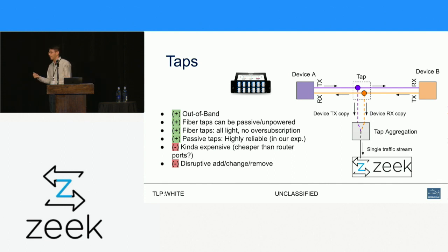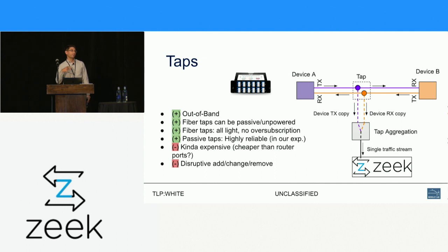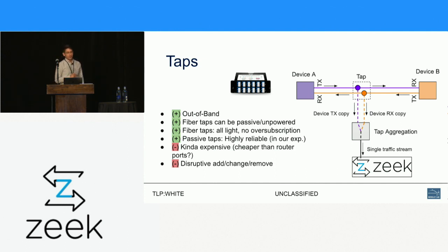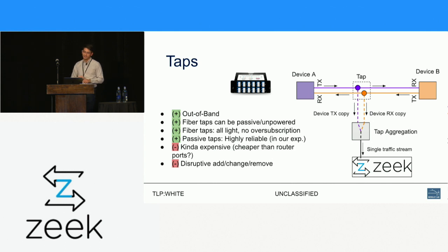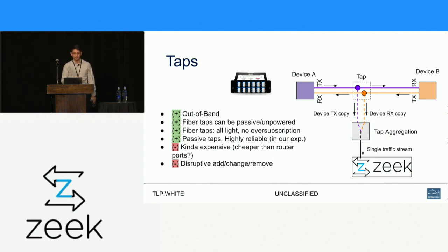You don't have to worry about them being powered, so you can install them in places that don't have power, or where you don't want a power outage to cause problems for your link. And because it's all light, there's no over-subscription. You get two pieces of fiber out of the tap and plug into two different interfaces, but you're not worrying about dropping packets.